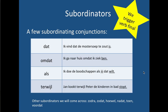'Als' means 'if' or 'when': 'Ik doe de boodschappen als jij dat wilt' — I'll do the shopping if you like — verbs at the end. 'Terwijl' means 'while': 'Jan kookt terwijl Peter de kinderen in bad stopt' — verb at the end, because this whole bit is the subclause and the verbs are kicked to the end. Other subordinators include: 'zodra,' 'zodat,' 'hoewel,' 'nadat,' 'toen,' 'voordat.' Everything to do with 'dat' is always a subordinator. And if you know the coordinators — 'en,' 'maar,' 'of,' 'want,' 'dus' — those link two main clauses, so all the others are always subordinators and always kick the verb to the end of the clause.